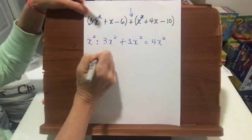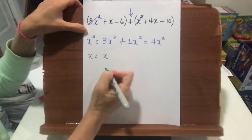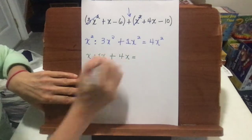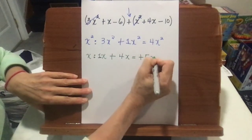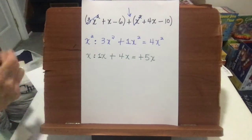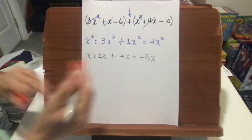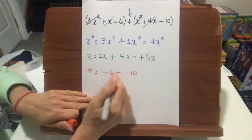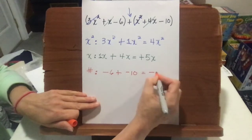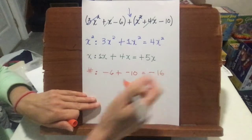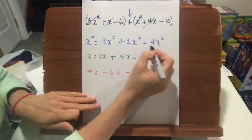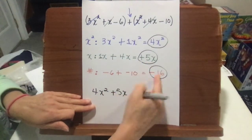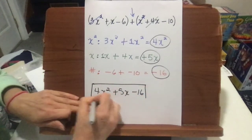Next, we have x's. We have a positive x and we're going to add it to a positive 4x. Remember, there's a 1 in front of this x, so write it. 1x plus 4x is a positive 5x. Write the sign so you don't forget it, then cross out your x's. For number terms, we have a negative 6 and we're adding it to a negative 10. When adding two negatives, we keep the sign — 6 and 10 makes 16, so negative 6 plus negative 10 is negative 16. Our final answer is 4x squared plus 5x minus 16.